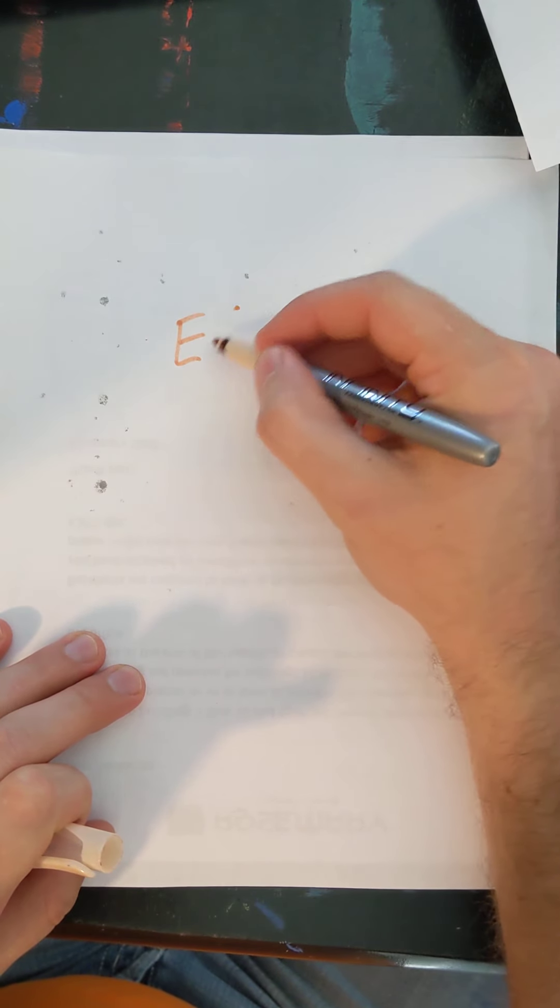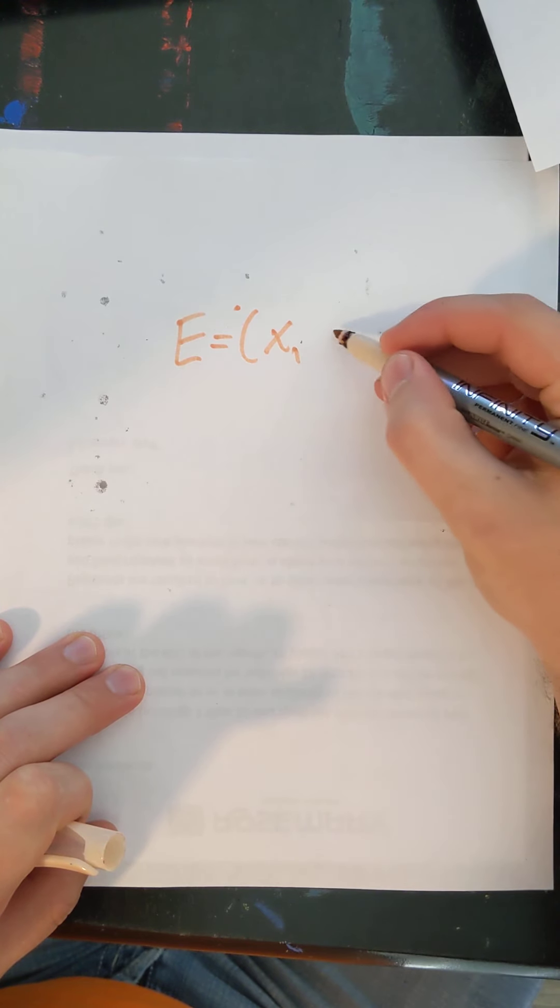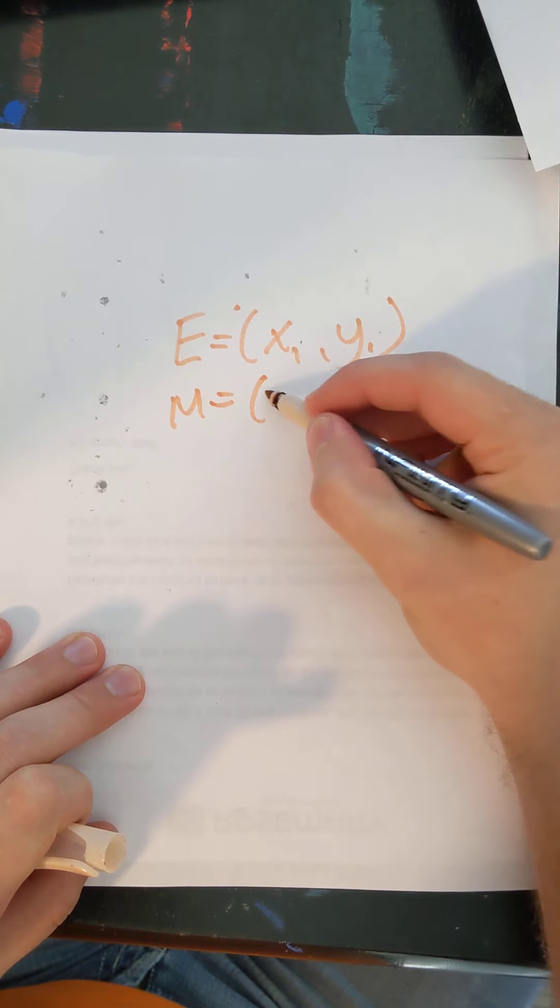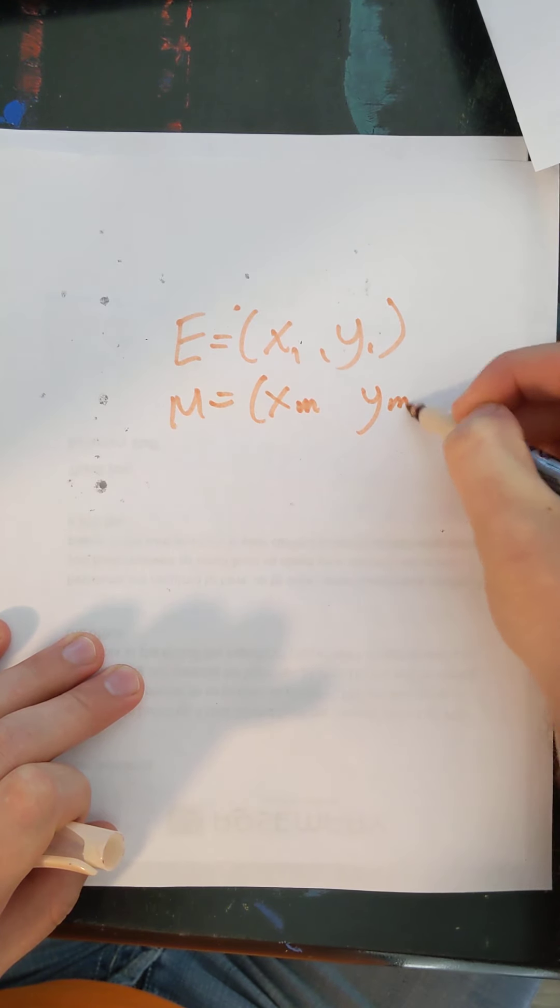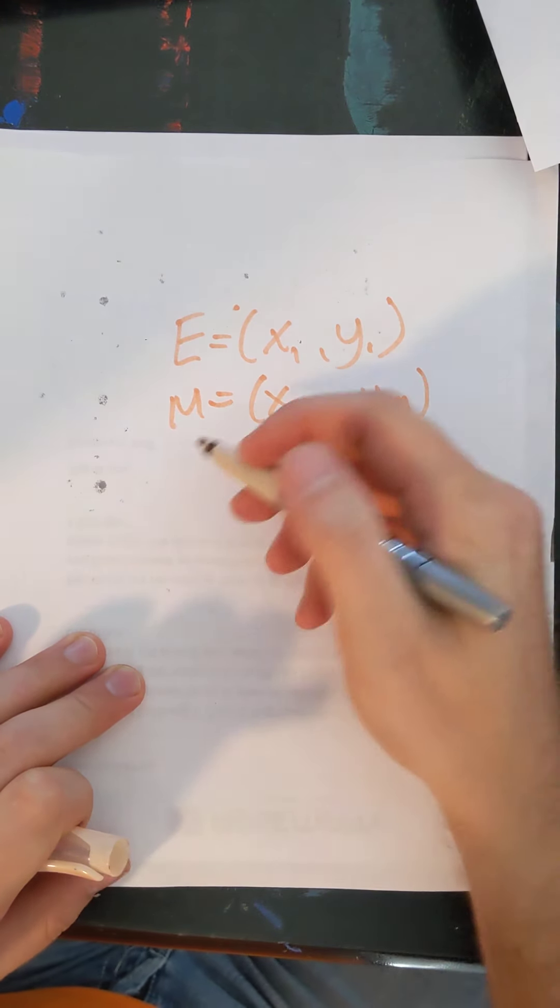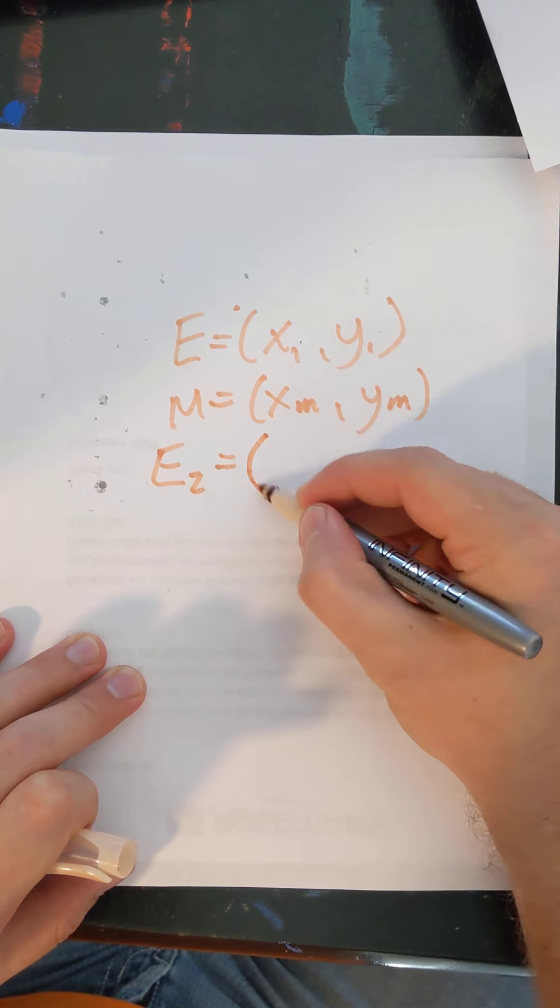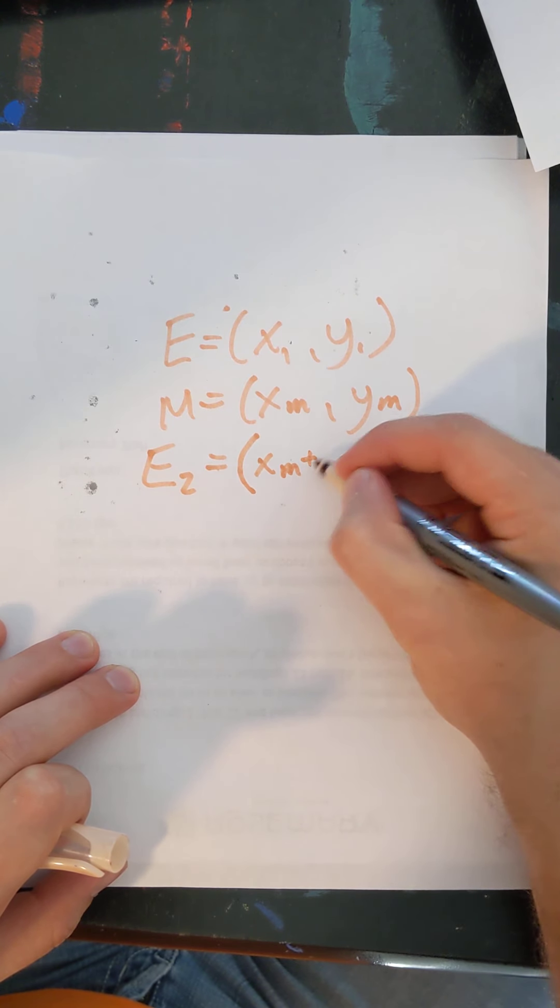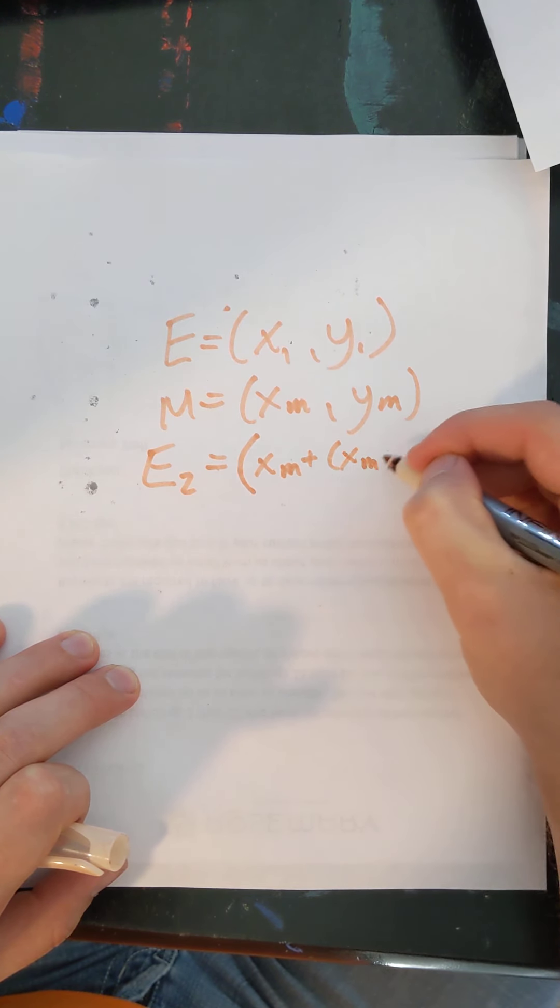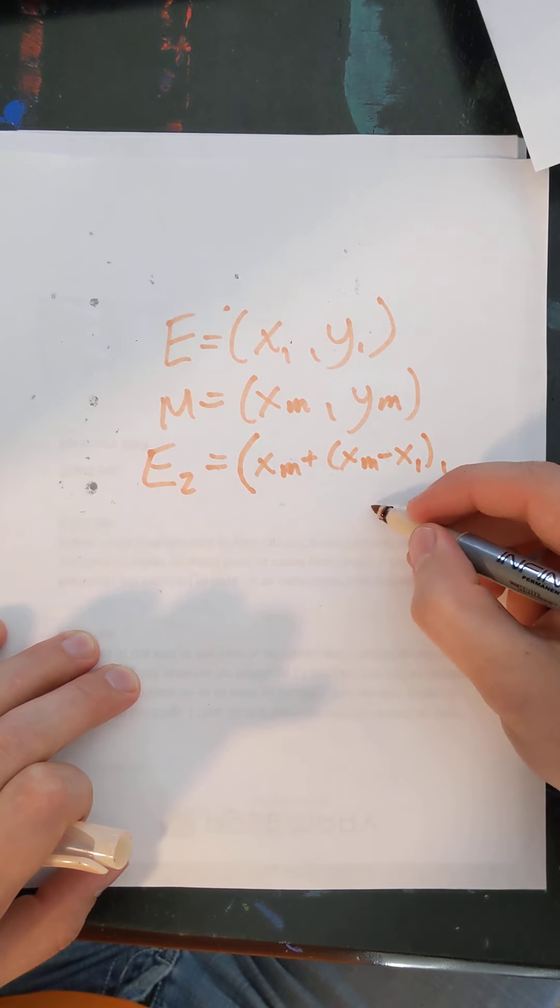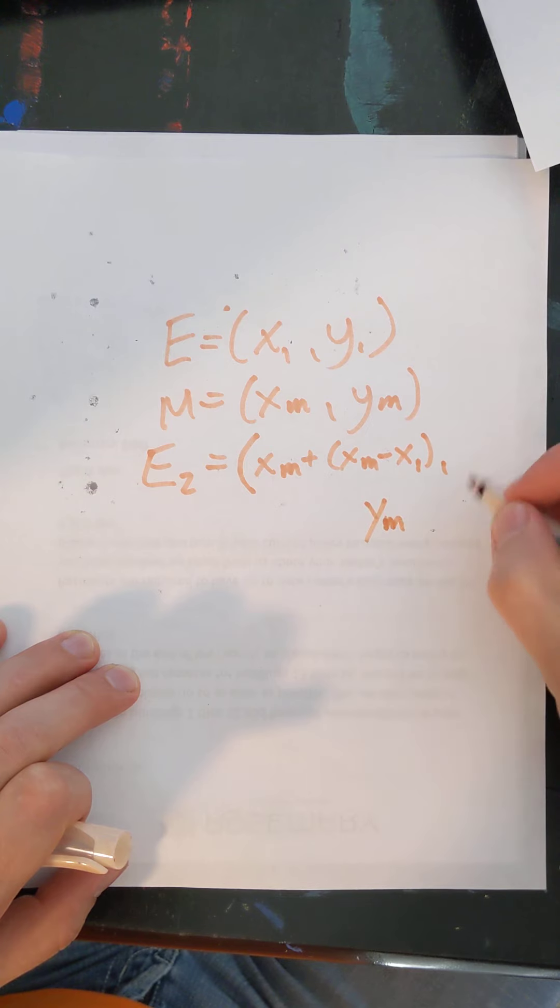Well, we're just going to go straight to a formula with this one. If you're given an endpoint, which we will call x1, y1. And if you're given a midpoint, which we're going to call xm, ym. Then in order to find the last endpoint, endpoint number 2, we'll call it. Well, that is found at xm plus the difference of xm minus x1. And then your y value is computed the same way. Midpoint plus y midpoint minus y1.